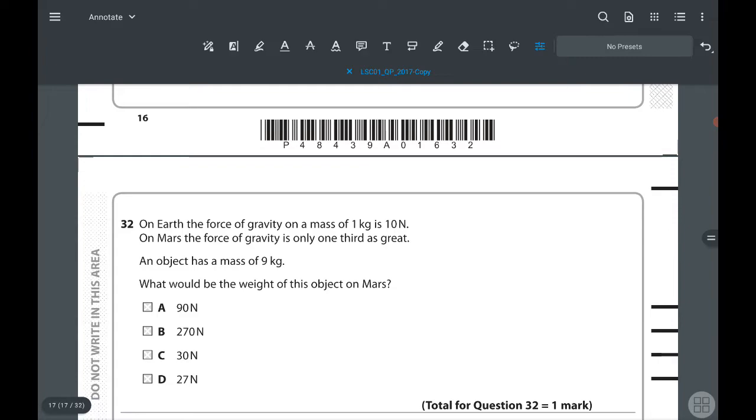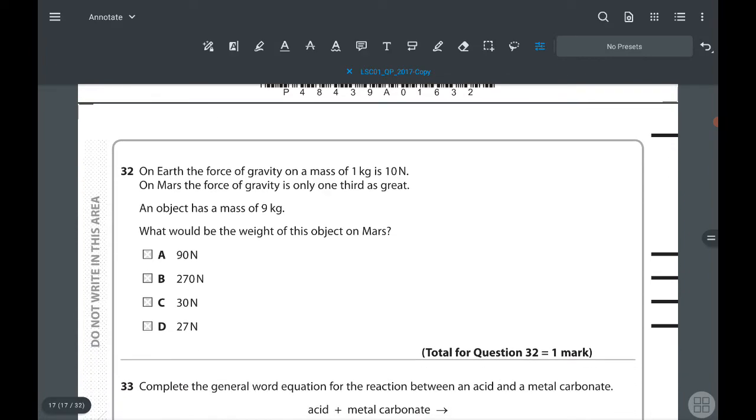32: on Earth the force of gravity on a mass of 1 kilogram is 10 newtons. On Mars the force of gravity is only one-third as great. An object has a mass of 9 kilograms. What would be the weight of the object on Mars? So 1 kilogram is having 10 newtons. In order to find out, I will use W equals mg equation. Mass is 9 here, and the gravitational field is like one-tenth. So the answer will be 30 newtons. Answer is C.